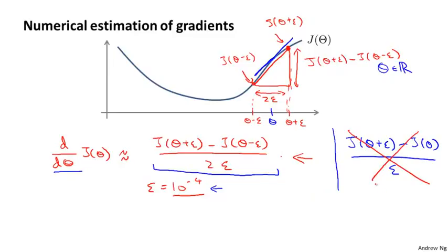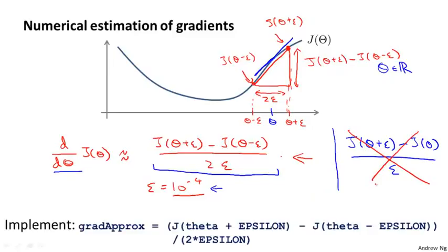Concretely, what you implement in Octave is the following. You implement code to compute gradaprox, which is going to be an approximation to the derivative — just this formula: J of theta plus epsilon minus J of theta minus epsilon, divided by two times epsilon. This will give you a numerical estimate of the gradient at that point, and in this example it seems like it's a pretty good estimate.